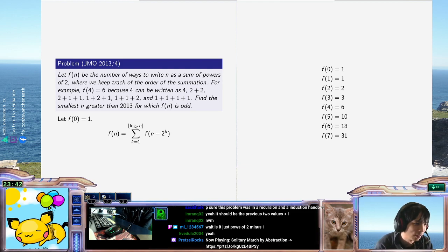Oh, is it positive 2 minus 1? Is that what it is? Okay. Alright. Claim: F of n odd if and only if F of n plus 1 is a power of 2.